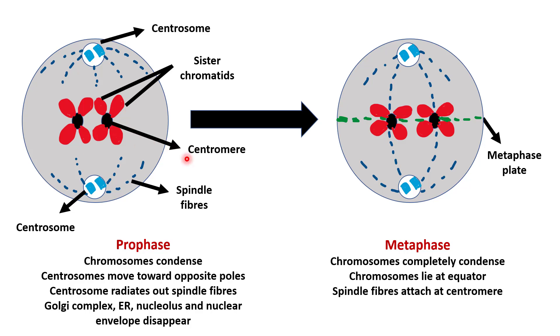In Prophase, the Golgi complex, endoplasmic reticulum, nucleolus, and nuclear envelope all disappear. Chromosomes are then spread throughout the cytoplasm.